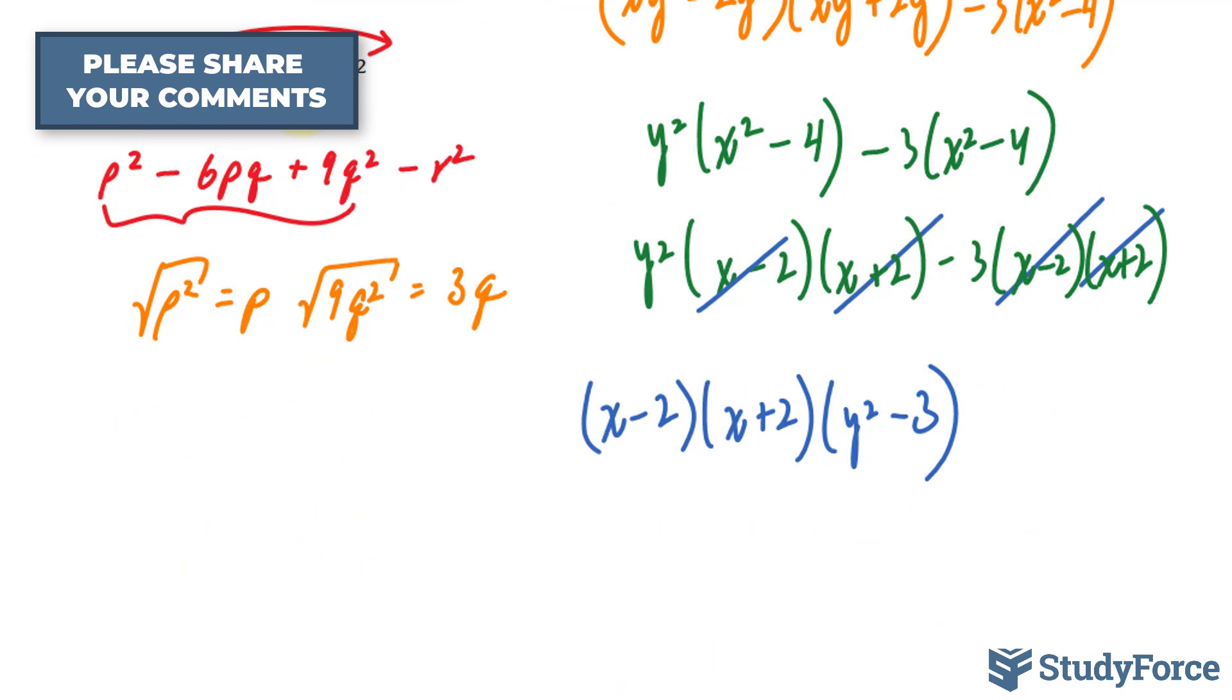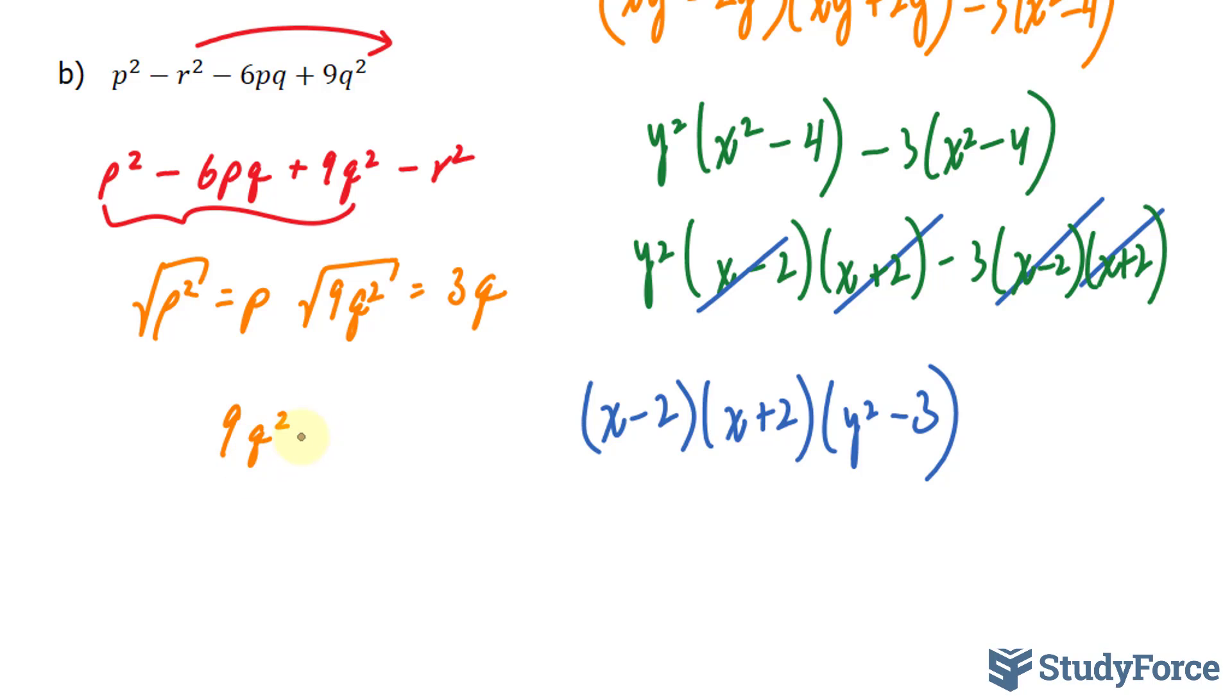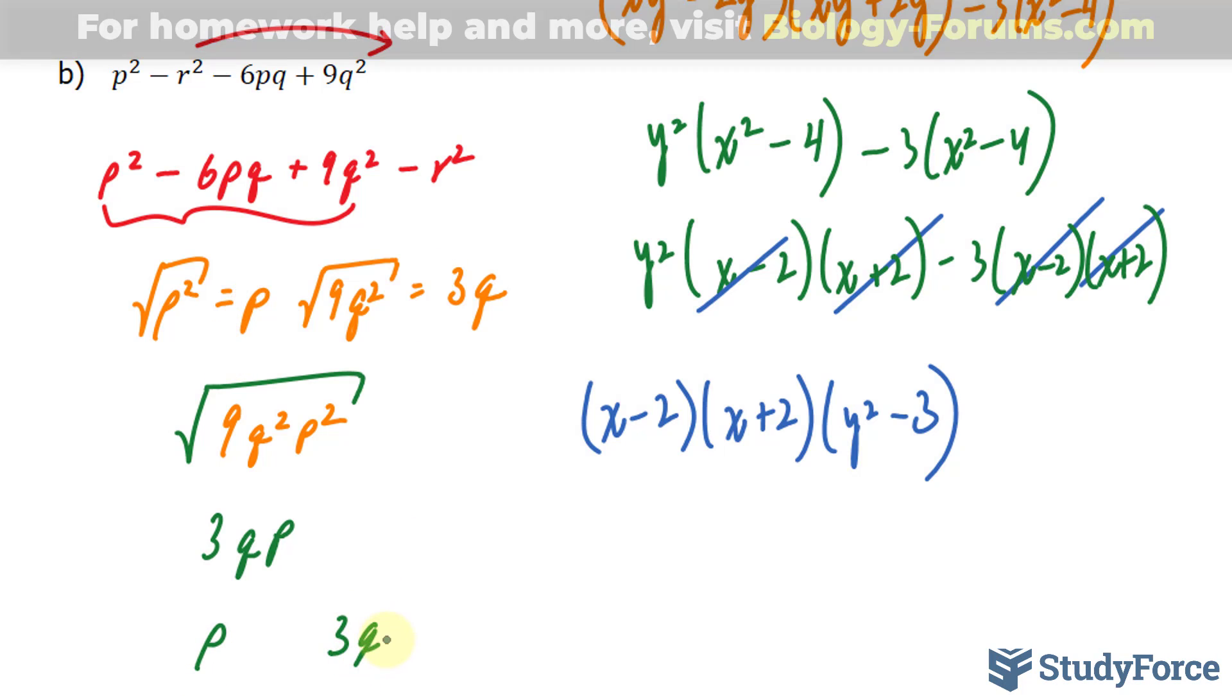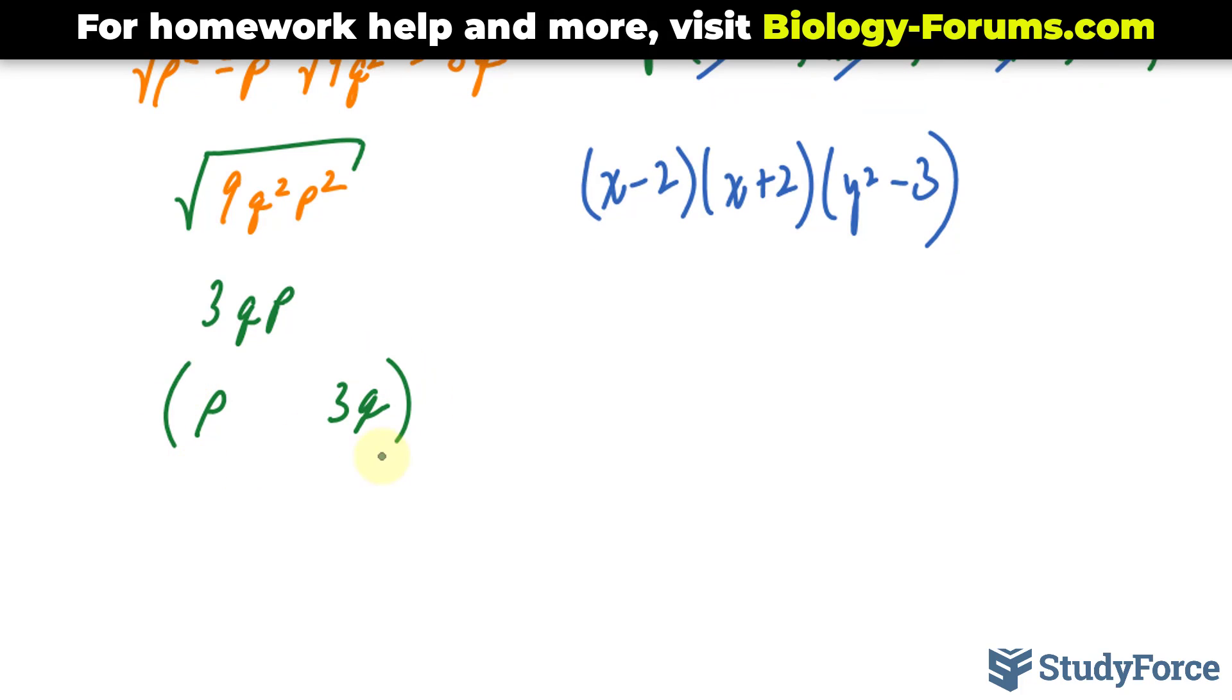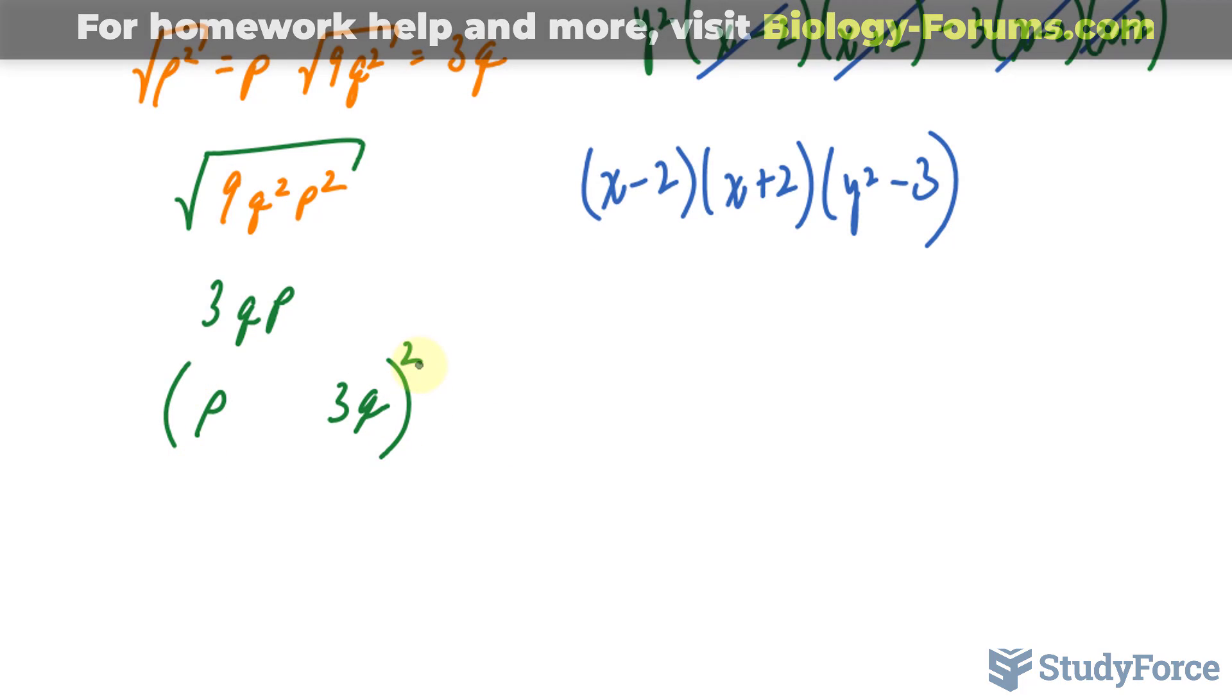In addition, if I multiply this term with that term, I end up with 9q squared p squared. And square rooting this gets me half of the middle term, where I end up with 3qp. This is half of 6pq. As a result, I took p and 3q, placed them in brackets, raised it to the power of 2.